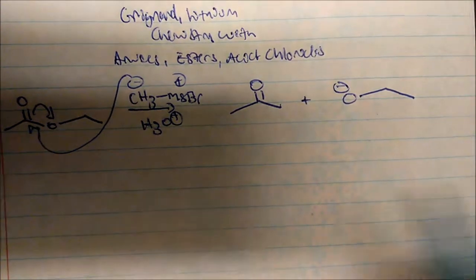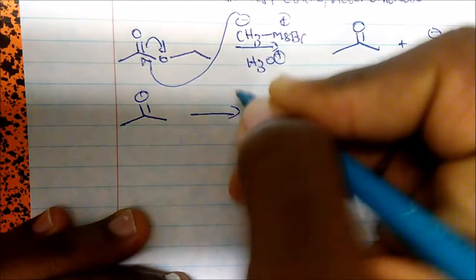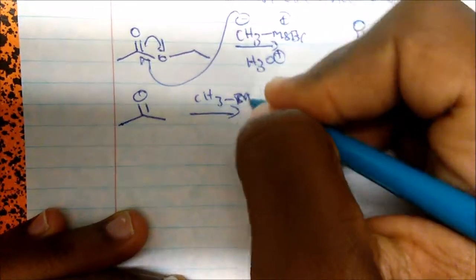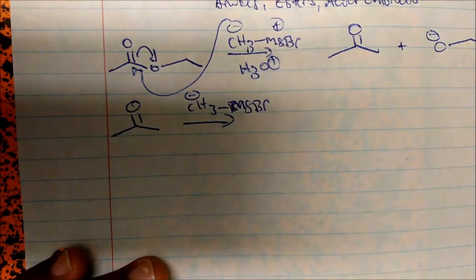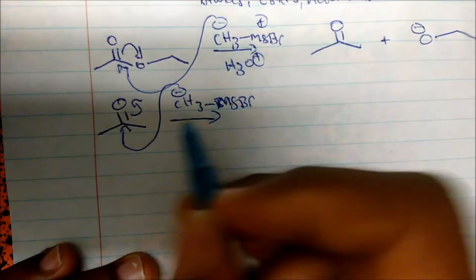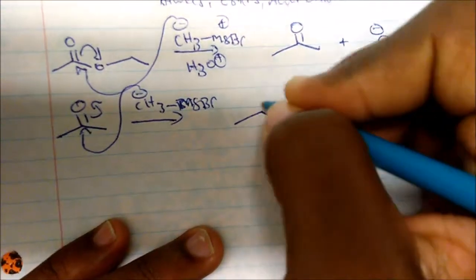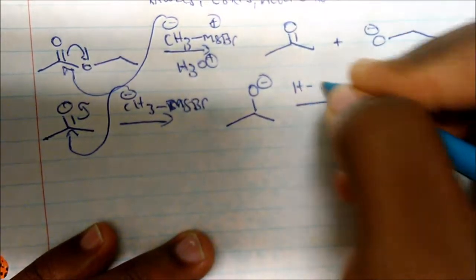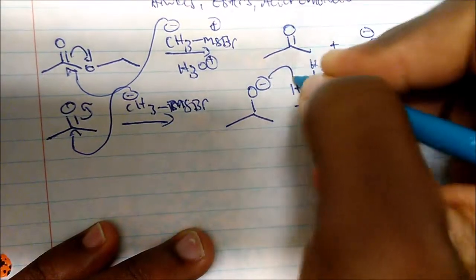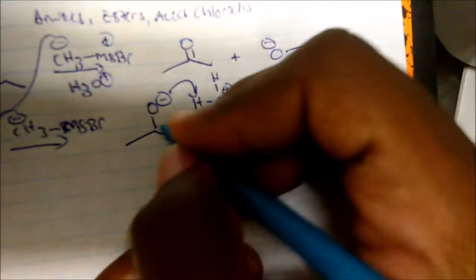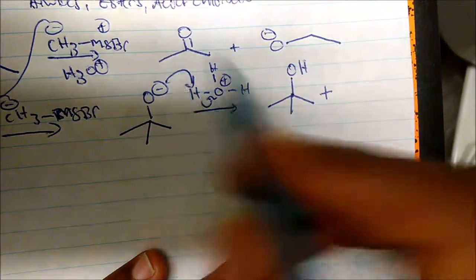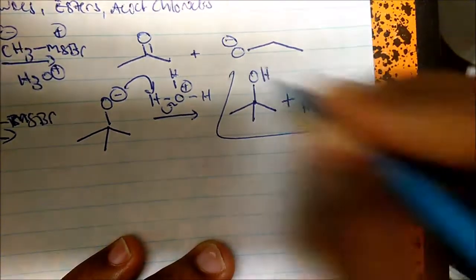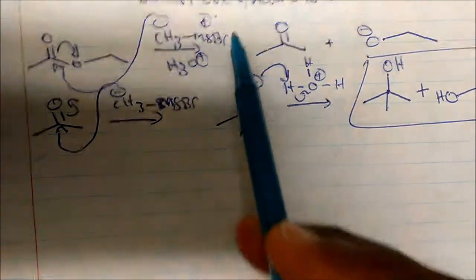What we care about is the ketone intermediate. Remember, we have plenty of methyl magnesium bromide in solution, and these reagents react with ketones and aldehydes. So we get another attack — the electrons kick up onto the oxygen, creating a negative charge. We add acid, and in this case we actually get a tertiary alcohol, plus the methanol byproduct. These are the net products we get — notice we got two additions when we use esters.